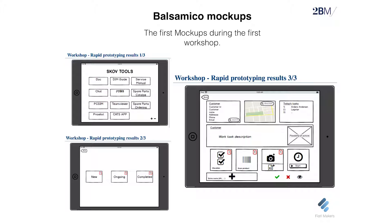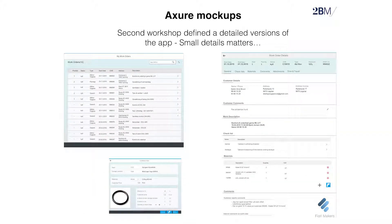Here you see some of the basic mock-ups done in Balsamiq during the first session. We came up with different ideas — something about a camera to take pictures, directions to drive to a location, customer information, and task descriptions. Later we moved to Axure, and what you see here is the design that is pretty similar to what the final application ended up looking like. Moving to Axure made it much easier to get into the real details of the application needs.